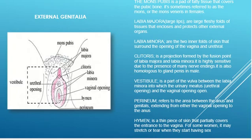That leads us to the vestibule. The vestibule is the part of the vulva that you can find between the labia minora. This vestibule contains the urethral opening and the vaginal opening.